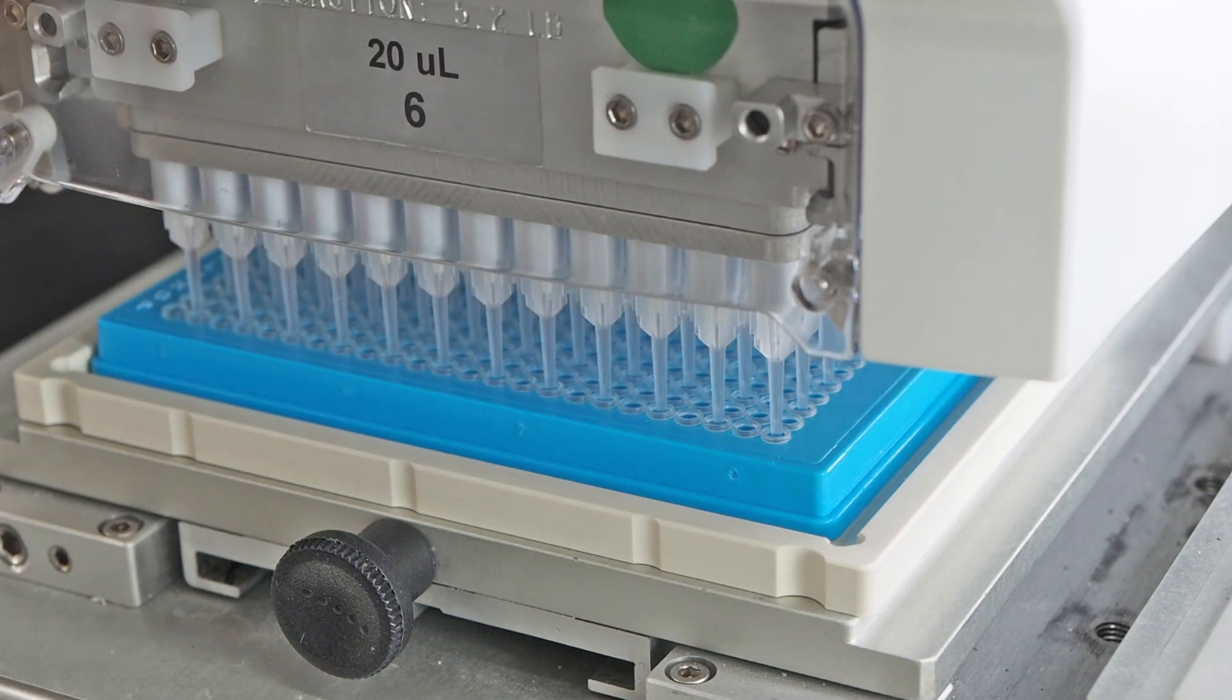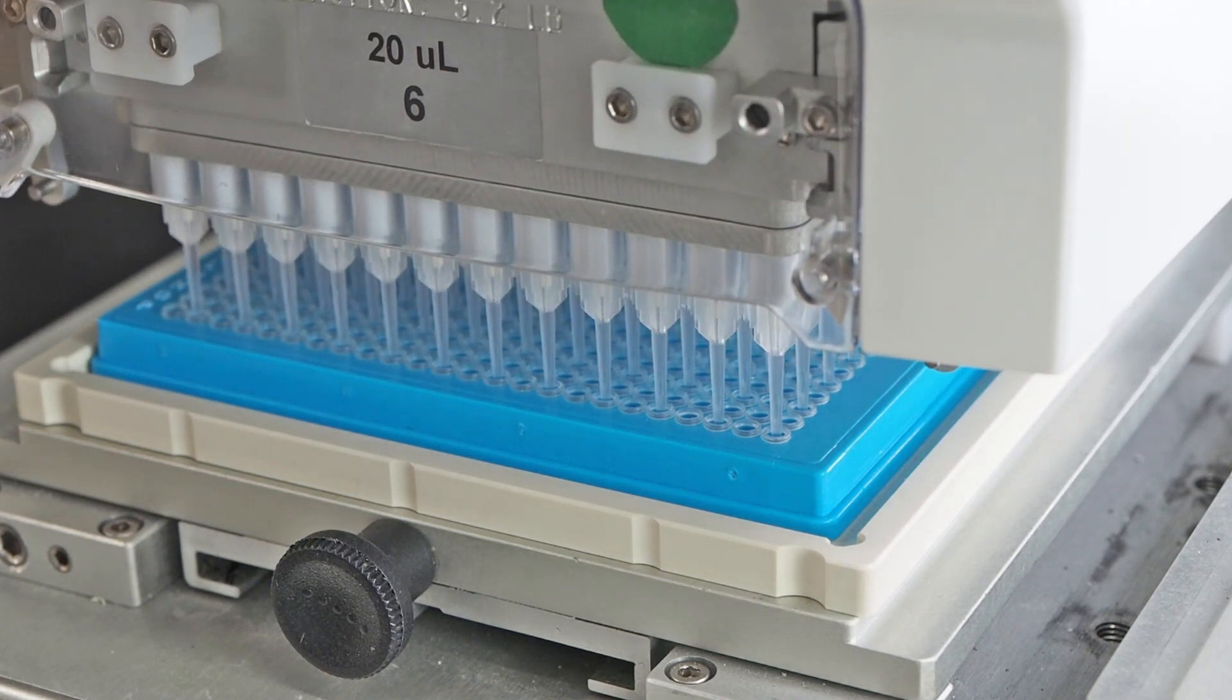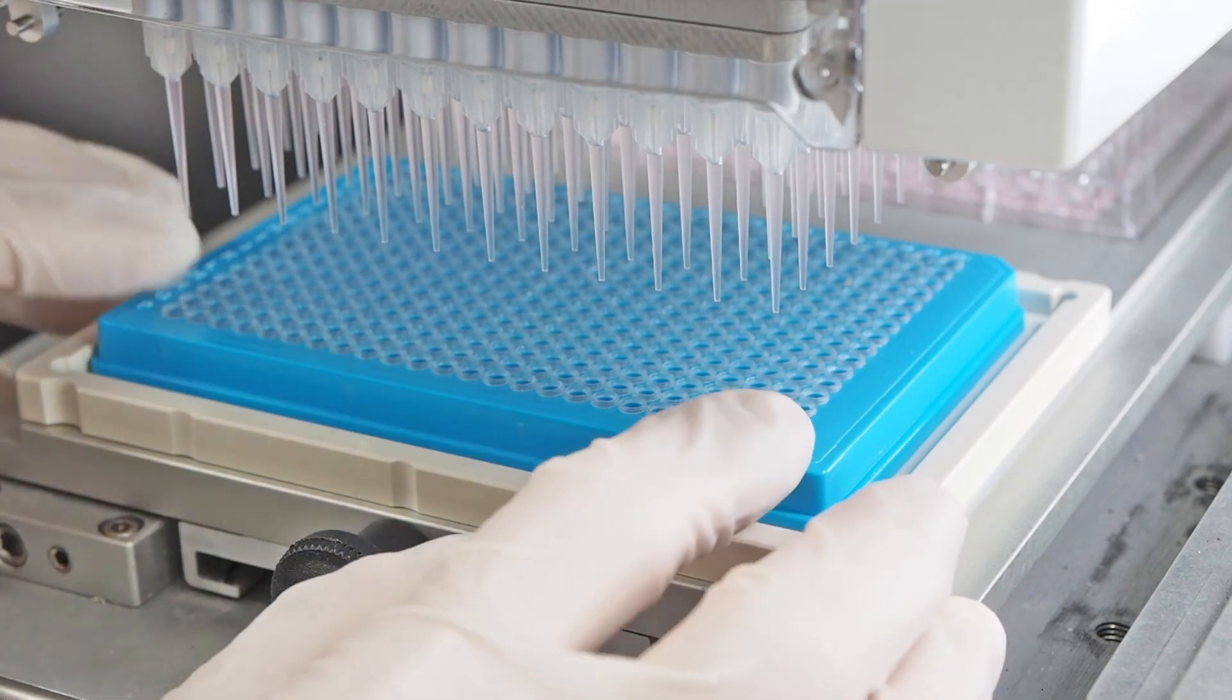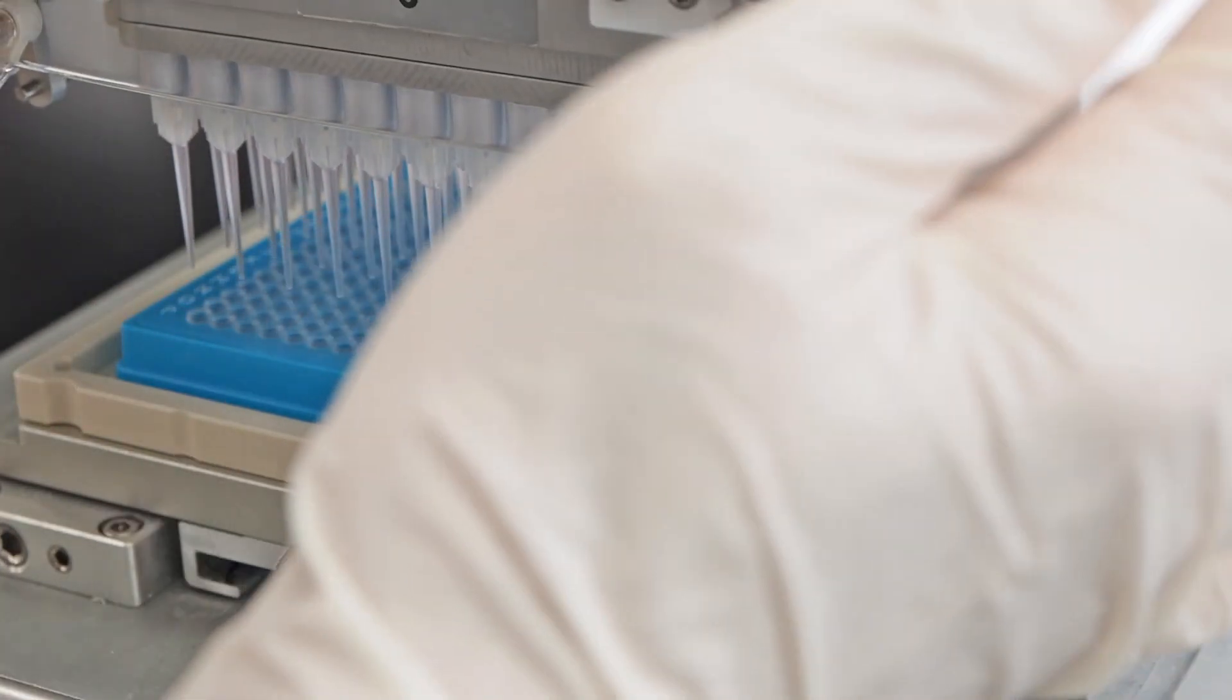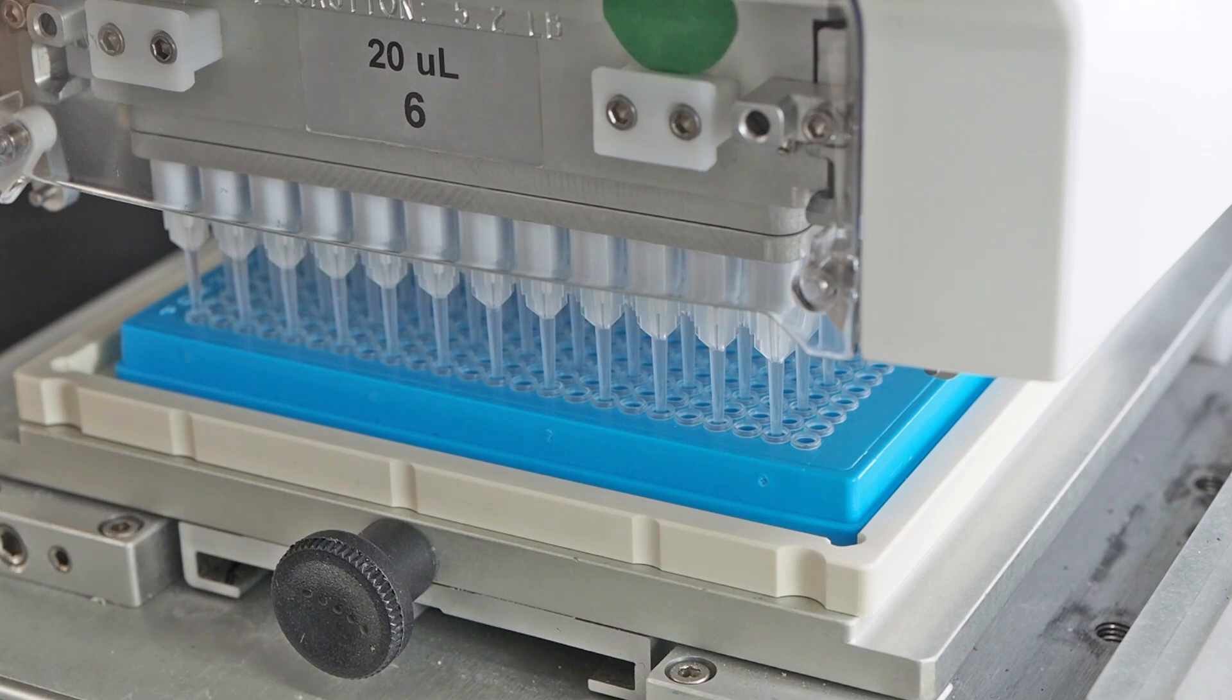Lower the pipetting head and dispense the first aliquot. Raise the head and move the 384 well plate to the upper right corner, position two. Then dispense.